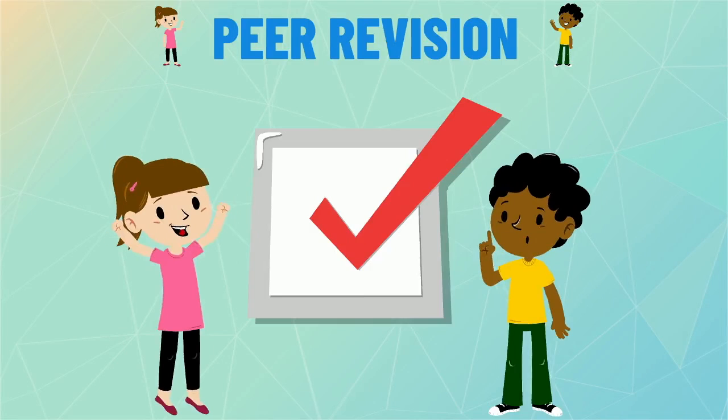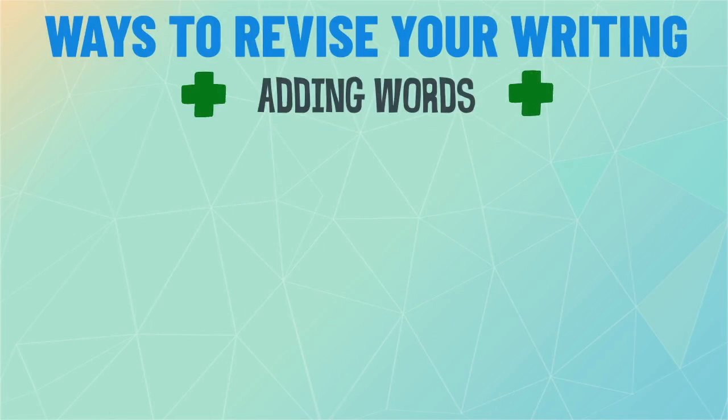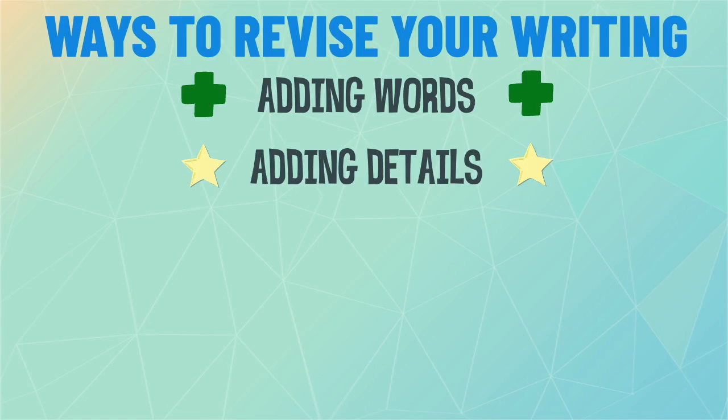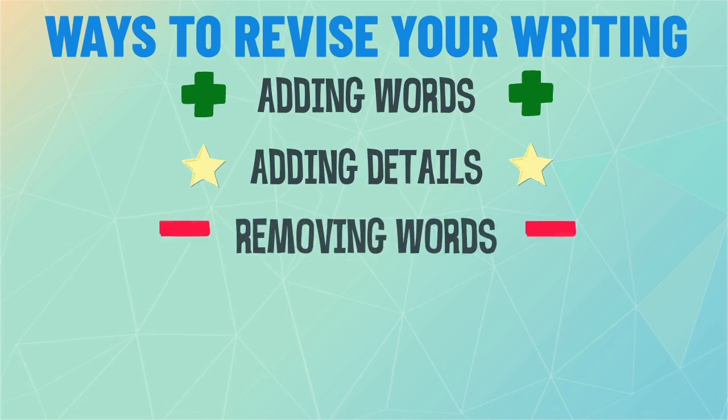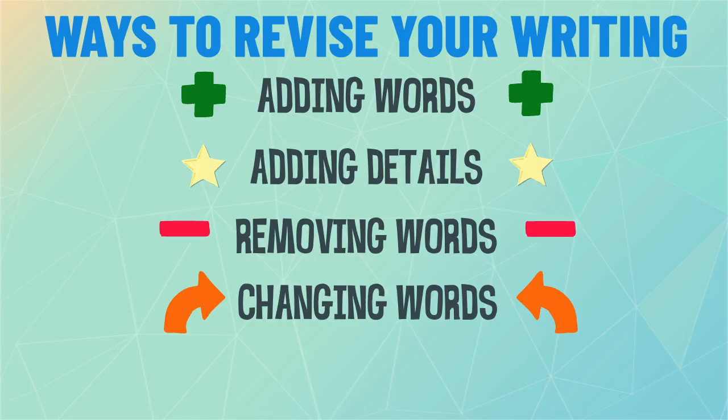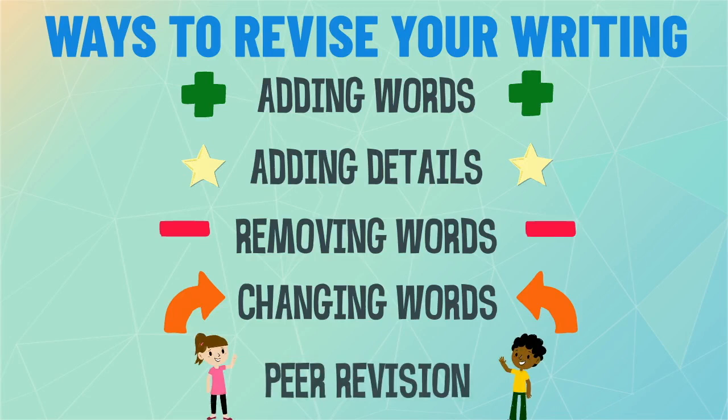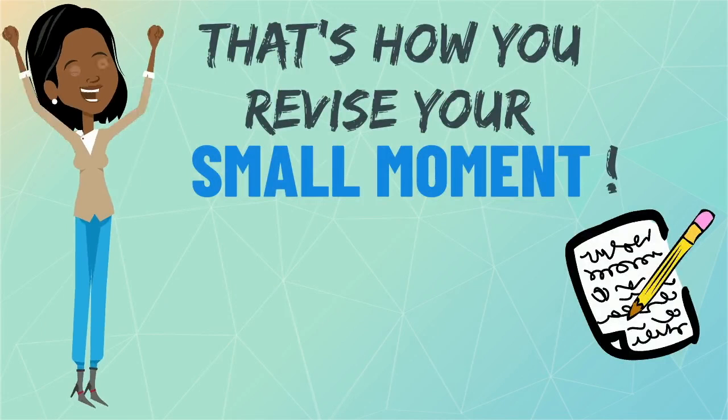I did it! I added words and sentences to make my story more interesting. Next, I used elaboration to add details using my five senses. I removed words that didn't make sense and changed words to make my story flow better. Next, I can ask a friend to look over my writing using a peer checklist. Then, I can move on to my next step. So, that's how you revise your small moment. Be sure to check out Part 7 where I edit my story.